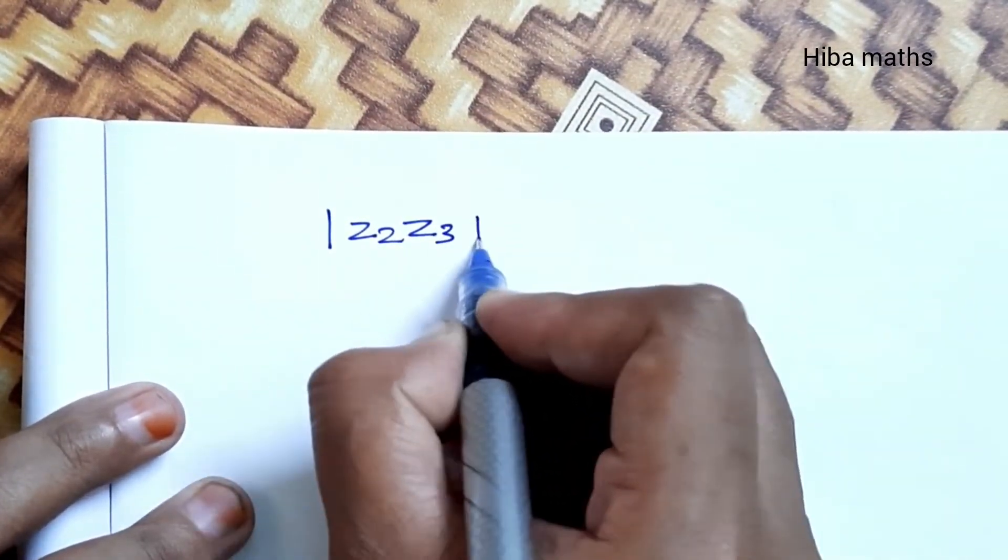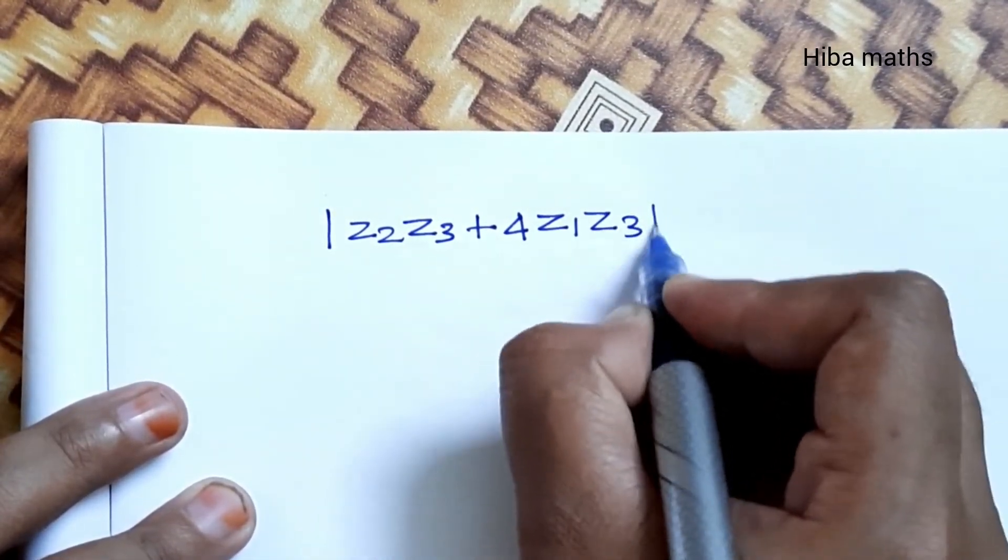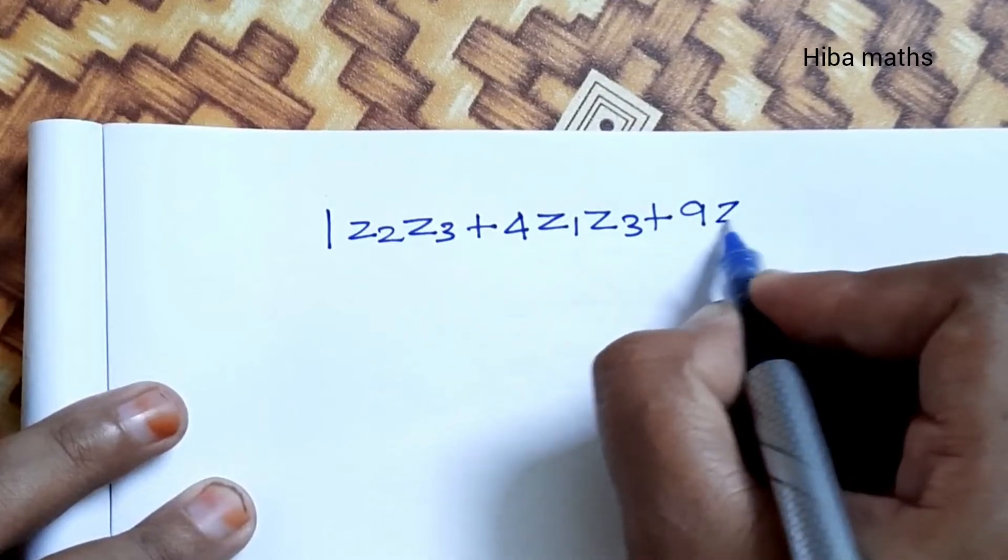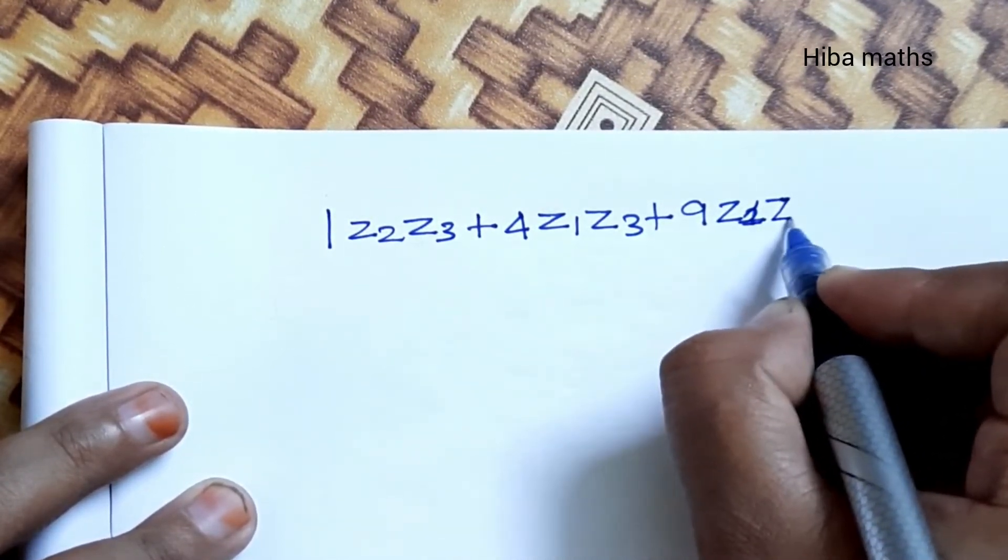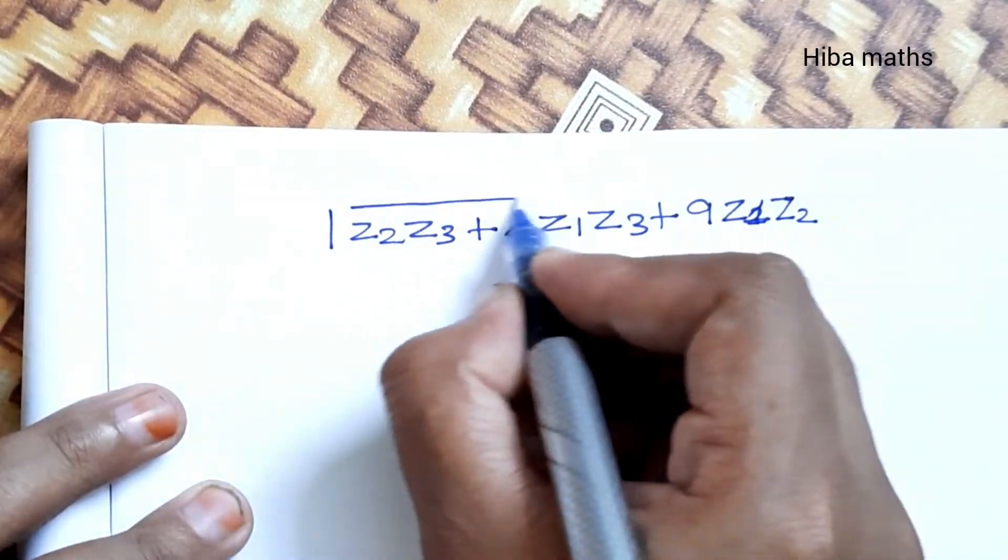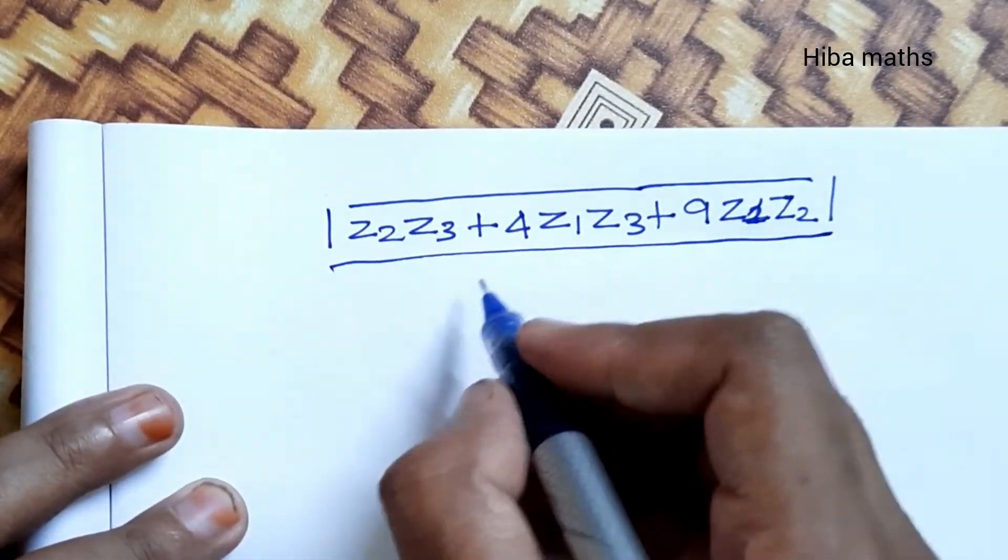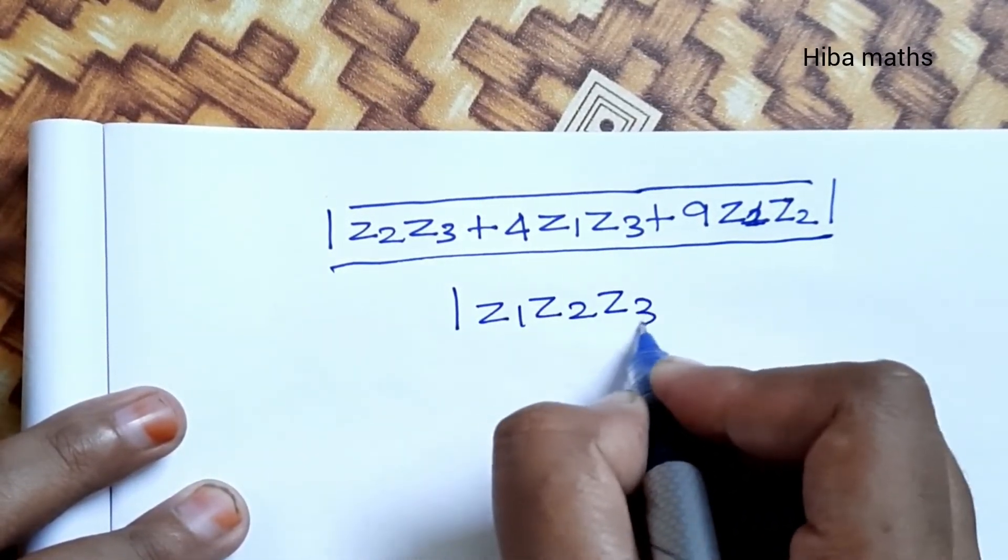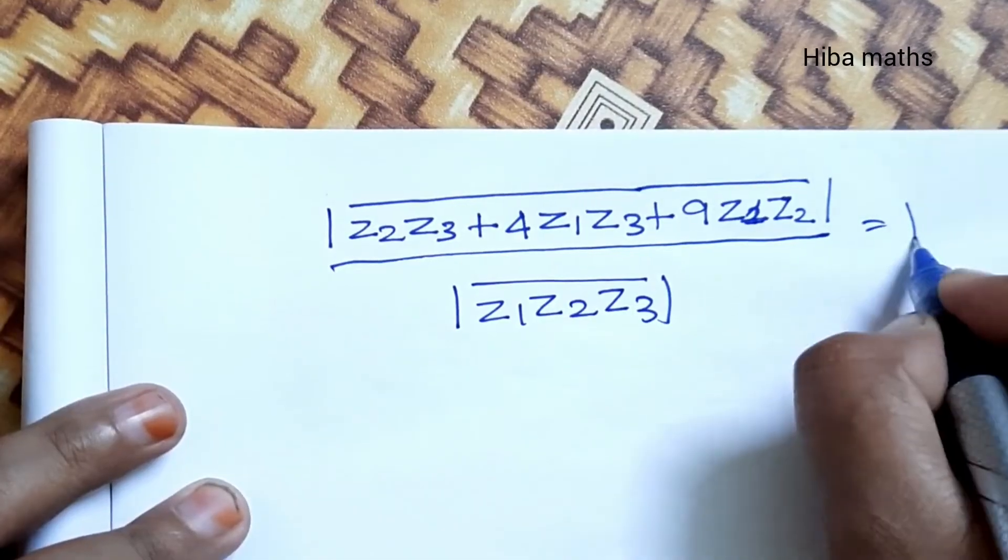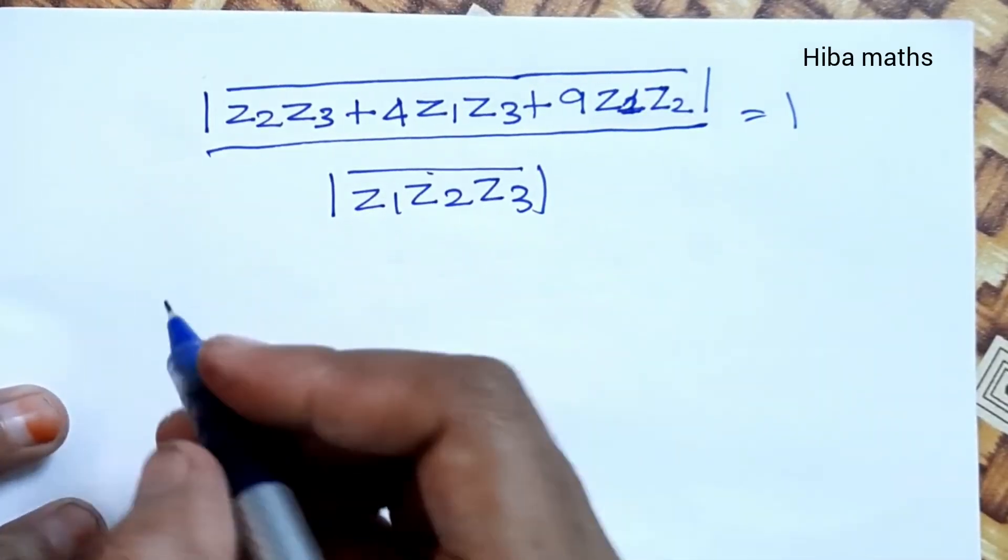Taking the modulus: Z2Z3 plus 4Z1Z3 plus 9Z1Z2, all divided by modulus of Z1Z2Z3, equals 1.